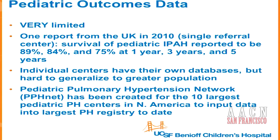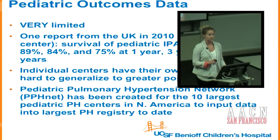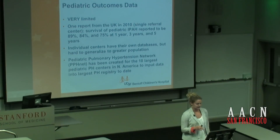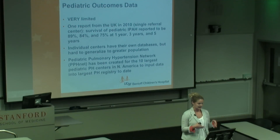There is very minimal pediatric outcomes data. One UK report from 2010 — from the single national referral center for pediatric pulmonary hypertension — showed survival for pediatric idiopathic pulmonary hypertension of 89%, 84%, and 75% at one, three, and five years with treatment. Without treatment, survival is thought to be six to twelve months. Jeff Fineman and a colleague from Denver started the Pediatric Pulmonary Hypertension Network (PPHNet), now involving the 10 largest pediatric PH centers in North America, building a registry that will be the largest of its kind.